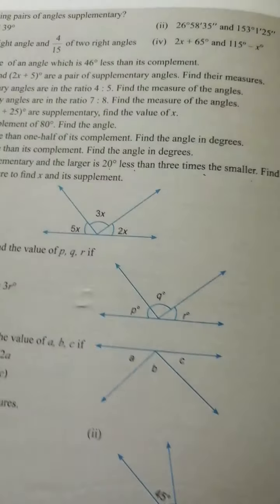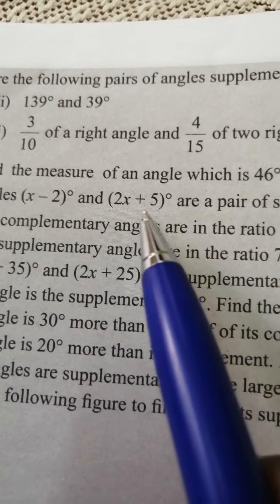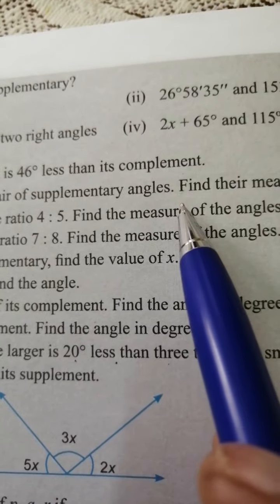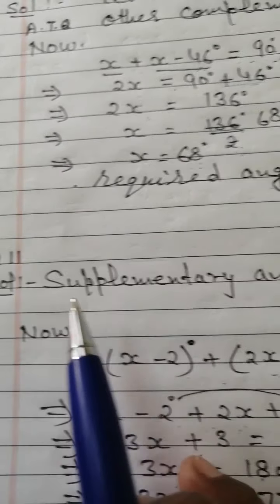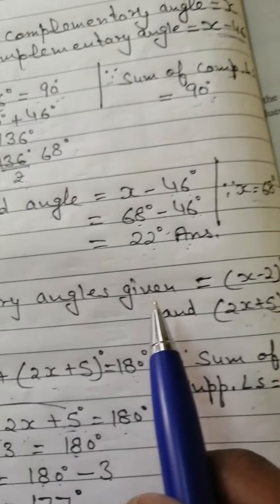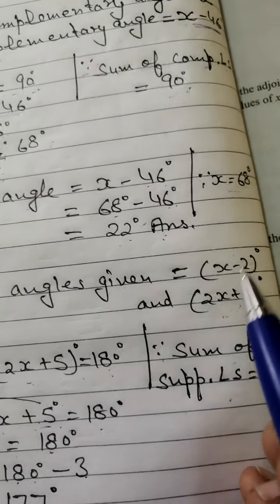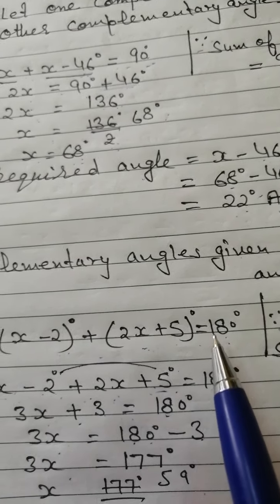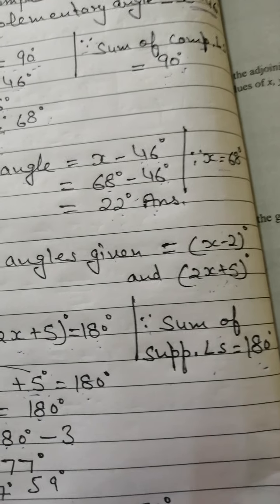Let us start next question number 11. Angles (x minus 2) degrees and (2x plus 5) degrees are a pair of supplementary angles. Find their measures. Solution: Two supplementary angles are given — (x minus 2) and (2x plus 5). Add these two angles equal to 180 degrees, because the sum of supplementary angles is equal to 180 degrees.